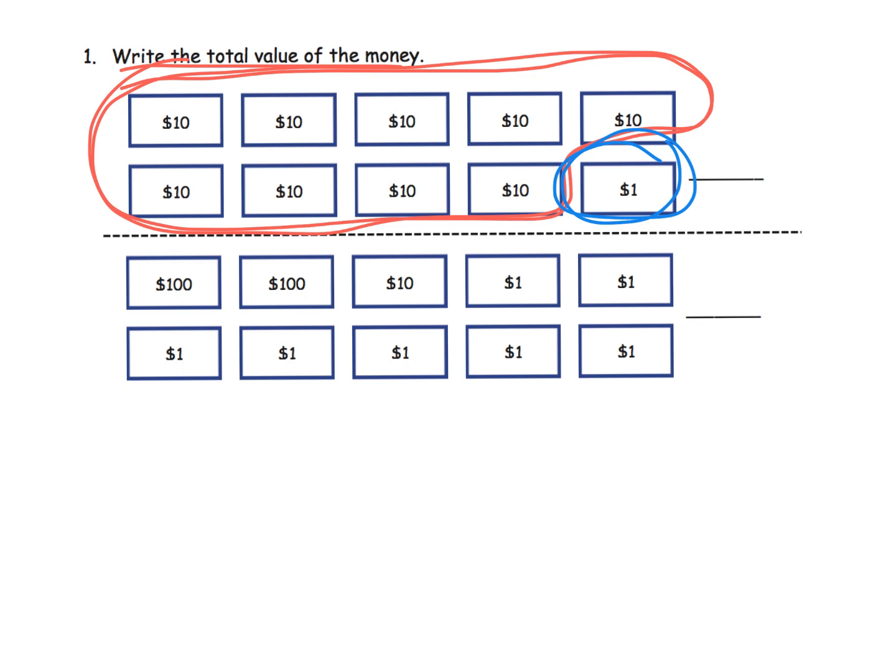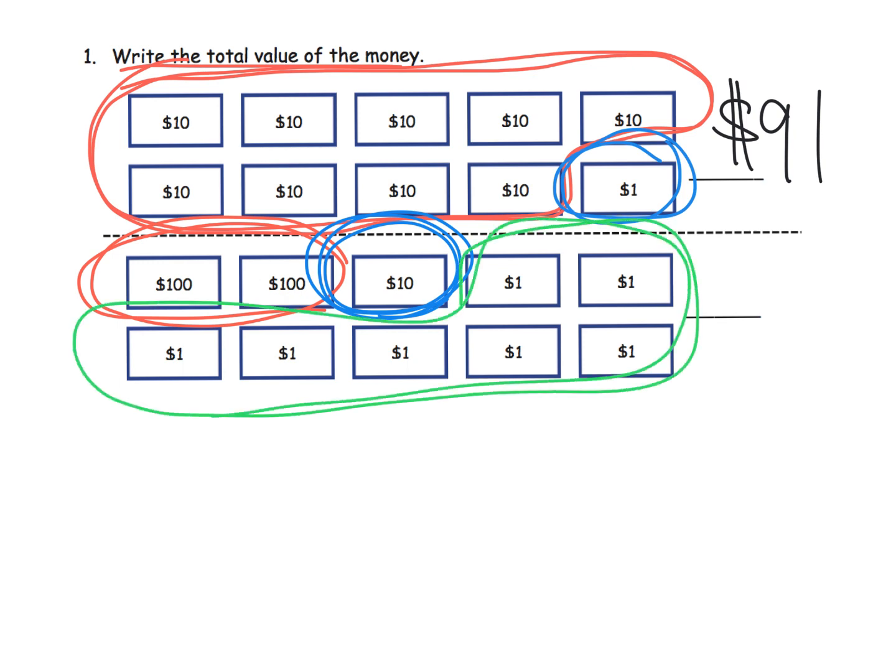Down here we can begin by counting our hundreds. We can see our tens right here, and then I'll move into the green—here's all of our ones. If we were to put all that together we have two hundreds, one ten, and seven ones, so our answer is 217.